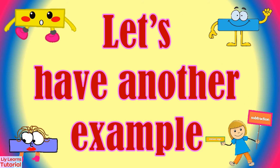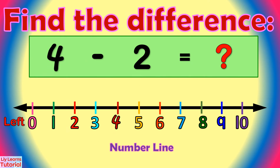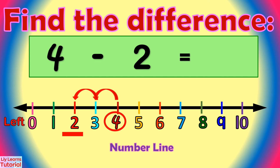Let's have another example. Find the difference of 4 minus 2. We start from the minuend, which is 4. Then we move 2 numbers to the left: 1, 2. We land on 2. So the difference of 4 minus 2 is 2.